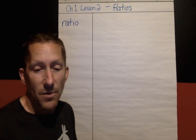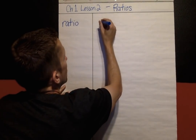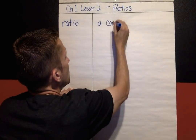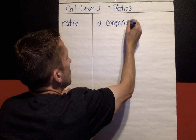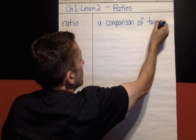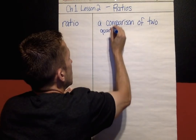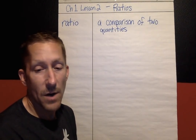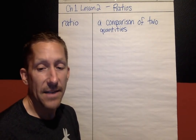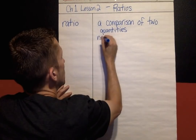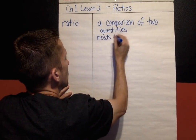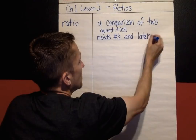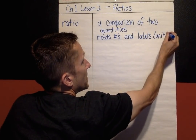So over here I'm going to write ratio, and over here I'm going to talk about it. A ratio — all a ratio is — is a comparison of two quantities or two amounts. That's all it is, a comparison of two different quantities. One of the key things about a ratio is that it needs numbers and labels. Or another way to think about labels is it needs units.